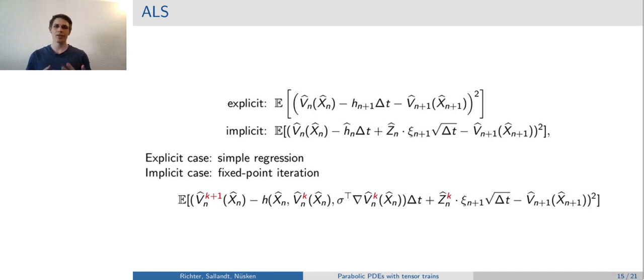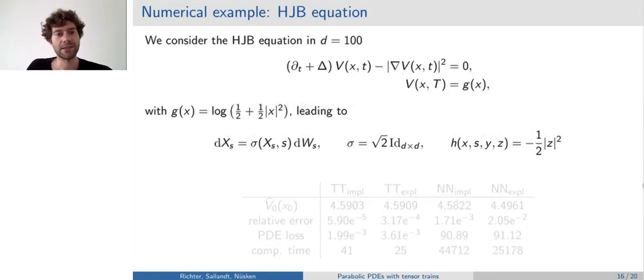For the explicit problem, this can be applied directly. For the implicit version, we use an iterative scheme, which reduces the nonlinear regression problem to a sequence of linear regression problems. So finally, let us provide some numerical examples in order to illustrate the performance of our algorithm. We start with the Hamilton-Jacobi-Bellman equation, which is a prominent PDE in control theory. Consider dimension d to be 100. It contains this Laplace term, which essentially has second derivatives, and a quadratic nonlinearity. I also wrote down the corresponding diffusion, which is a scaled Brownian motion, and the nonlinear function h.